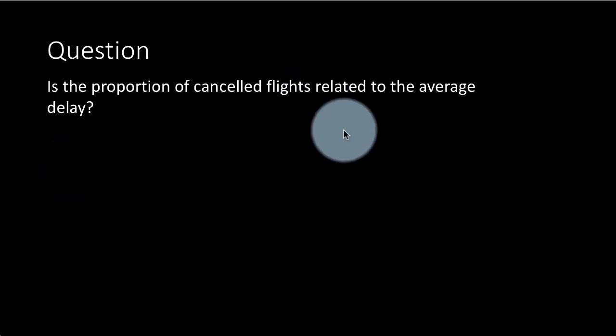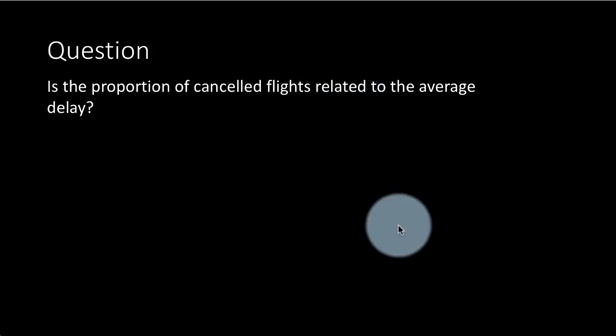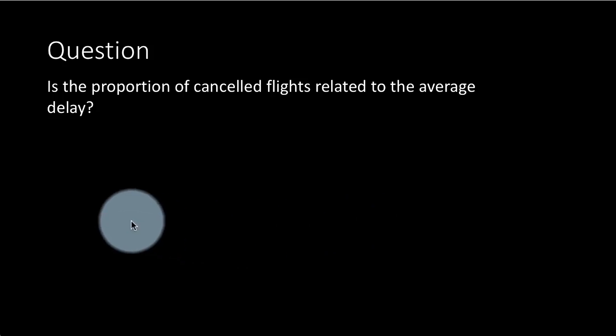So here we are saying is the proportion of cancelled flights related to the average delay. In other words, for every day, we want to calculate the proportion of cancelled flights. And we also want to calculate the average delay for each day and see if there is any connection. One would expect that there is some connection, right? Because most of the time, a lot of flights get canceled due to weather conditions. And under weather conditions, you will find that many of the flights are delayed, especially the departure time, arrival time, whatever. So there we can expect that there is some correlation. Let's check it out.